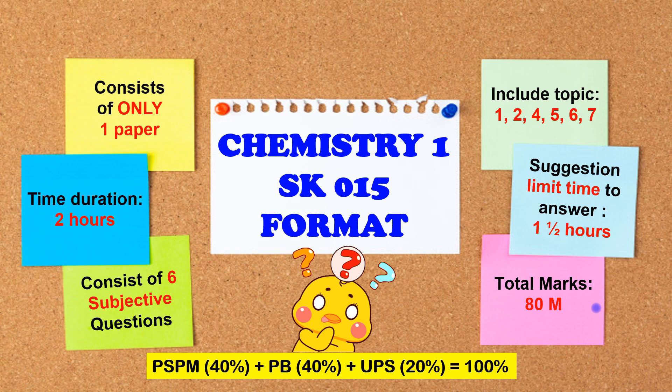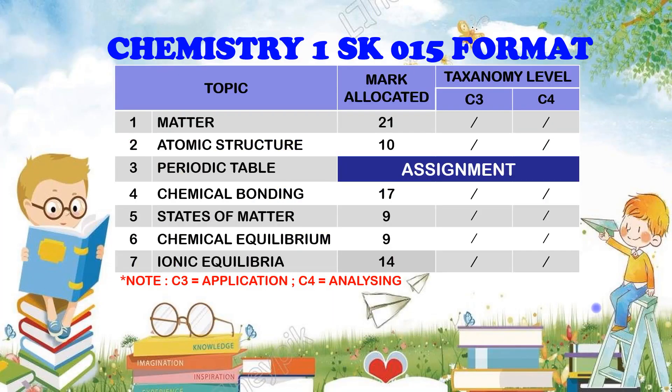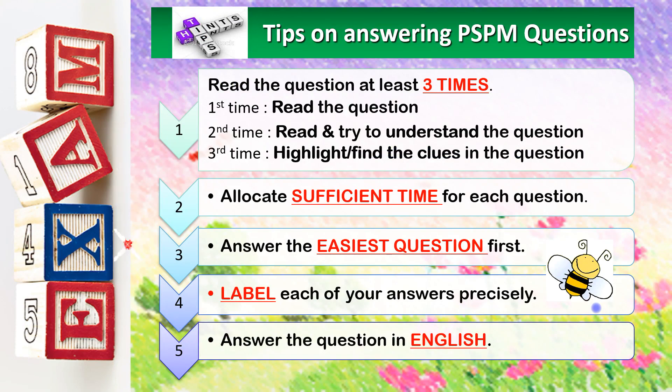This question paper contributes 80 marks. Here are the marks allocated for each topic. Topic 3, the periodic table, is excluded from the final exam since this topic has been chosen for the individual assignment.